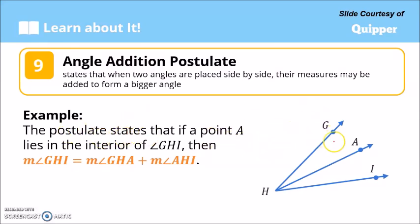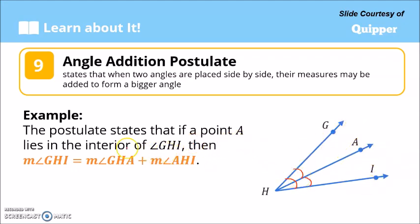For example, we have angle GHI as the bigger angle, and the smaller angles are angle AHI and angle GHA. The postulate states that if point A lies in the interior of angle GHI, then the measure of angle GHI equals the measure of angle GHA plus the measure of angle AHI.